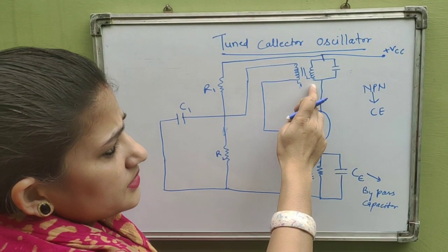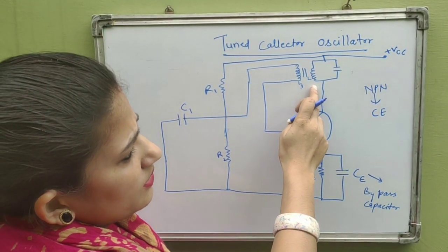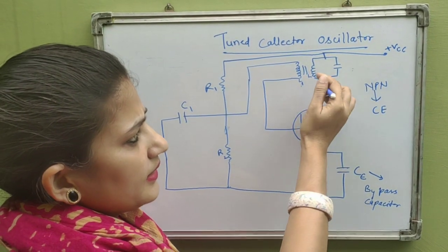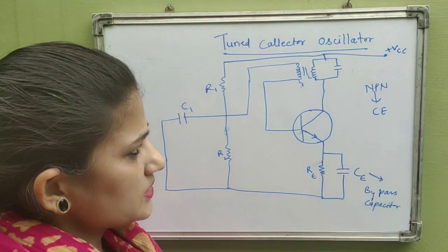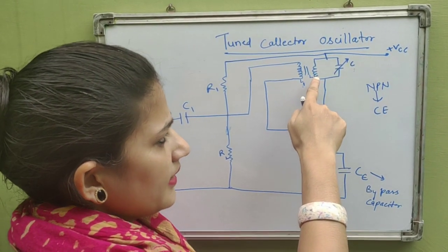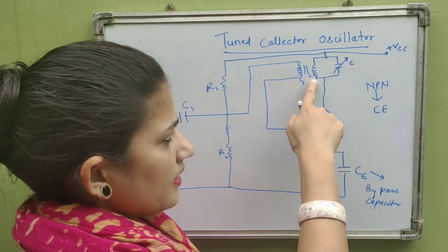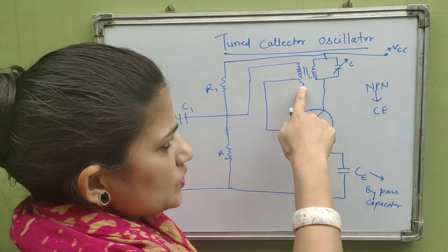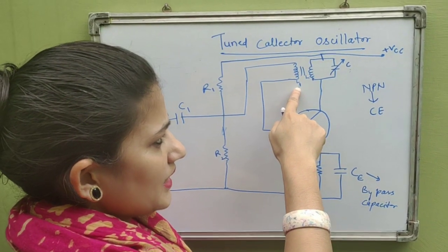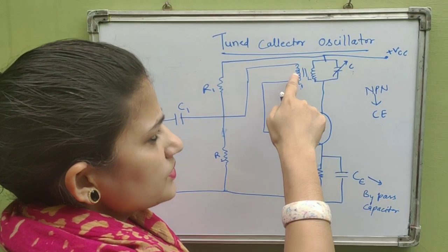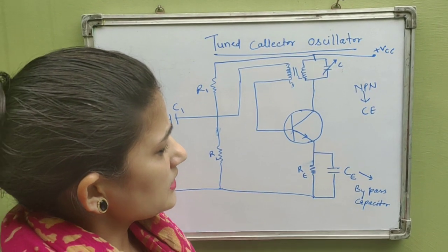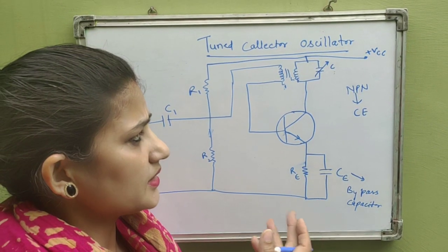The tank circuit is a parallel combination of capacitor C and inductor L. By changing the value of C, we can change the oscillation frequency. This change in inductance L corresponds to a change in mutual inductance with L1, which induces an EMF in L1.